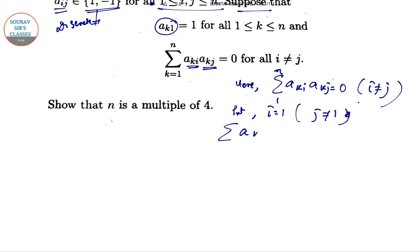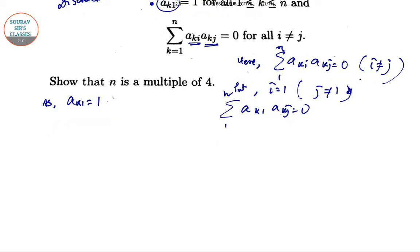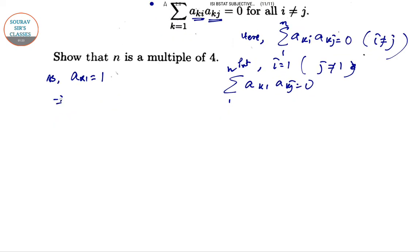So summation of a_k1 a_kj equal to 0. As a_k1 equal to 1, so a_1j plus a_2j dot dot dot a_nj equal to 0. That is, the sum of the elements in the jth column is 0.